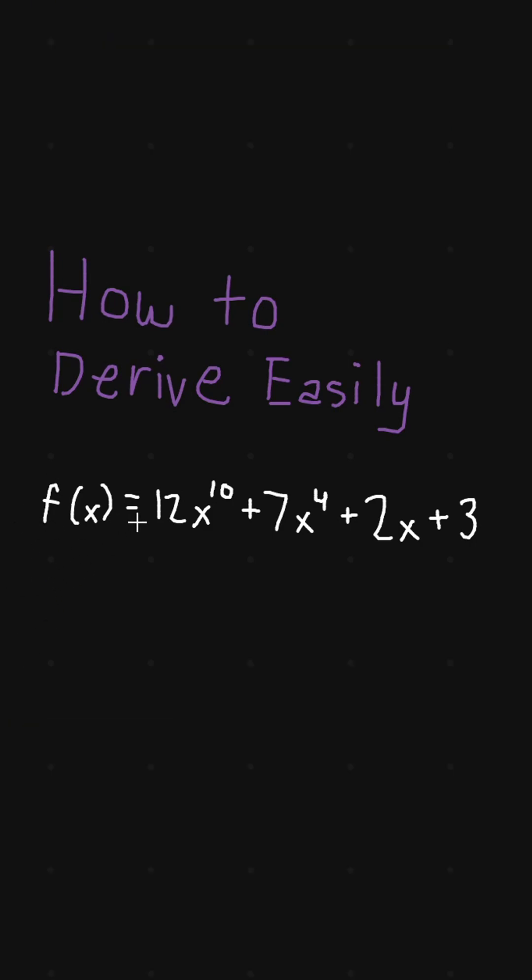We're given the function f(x) = 12x^10 + 7x^4 + 2x + 3.